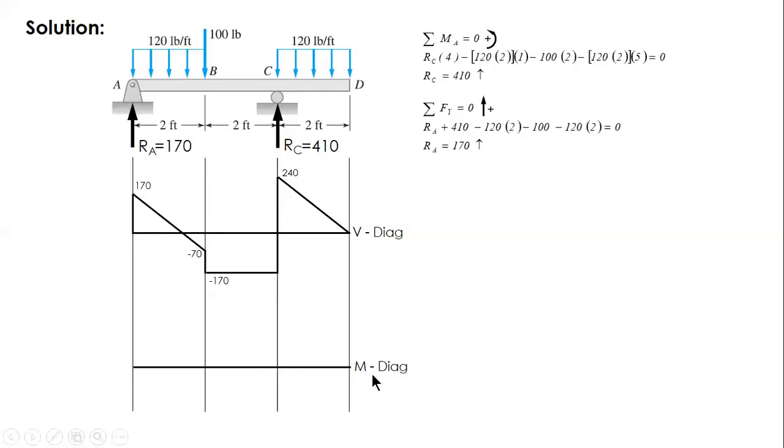And before you draw the moment diagram, first locate the point where shear is zero. To get the distance, just do a ratio and proportion. So 170 is to x equal 70 is to 2 minus x. And you'll have x equal to 17 over 12. Or you can also use my shortcut. Just divide the shear force by the uniform load. So 170 over 120, you'll have 17 over 12.